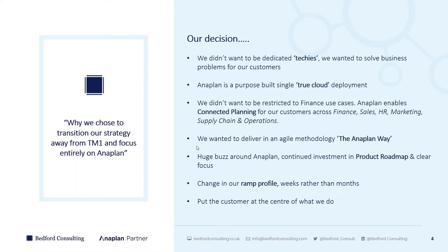Cloud was still a bit of a taboo subject when we first got involved with Anaplan, so it took us five years to transition — ramping down TM1 and running up Anaplan. But there was a huge buzz around Anaplan and true cloud, with massive continued investment into the product roadmap. Anaplan had a very clear focus, which was different to what we were seeing from IBM, who were already starting to divest from areas like CDM and Cognos Inside. Anaplan was a very clear message with massive investment — massively appealing to us.